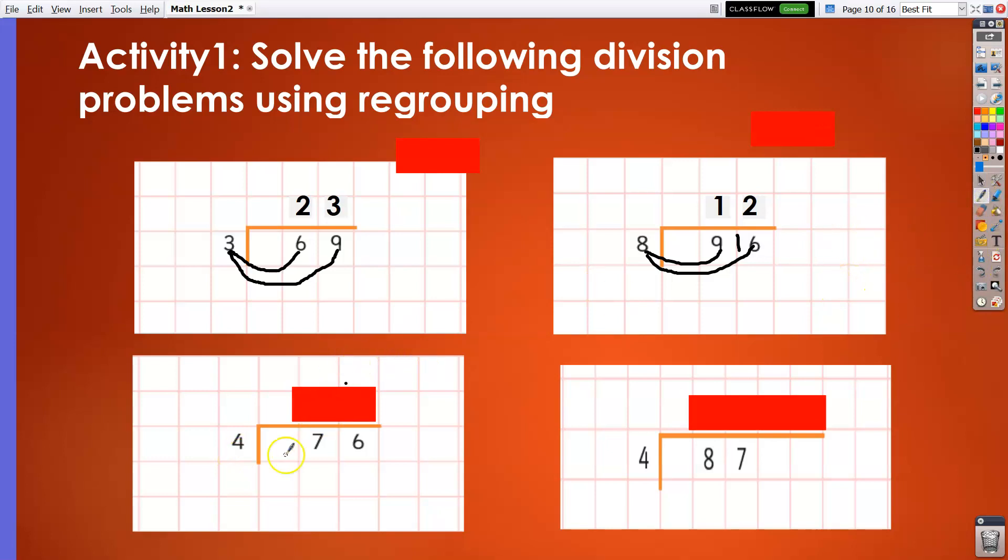The next is 76 divided by 4. So we have to divide 7 by 4, that is just 1 and remainder 3. So we get 36 here. 36 divided by 4 is 9, so the answer is 19. And finally, we got 87 divided by 4. 8 divided by 4 is 2, so we could just simply put the 2 up there. And 7 divided by 4 is 1, then we got remainder 3. So the answer is 21 remainder 3.